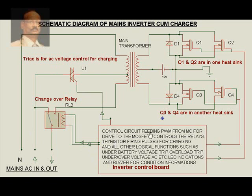The control circuit provides PWM pulses, either from a microcontroller or from a PWM IC like the SG3524, which is a very popular IC for driving the MOSFETs. It also controls the relay, provides triac firing pulses based on battery voltage feedback for charging, and handles logical protection functions such as under-battery trip when battery voltage falls, overvoltage trip, overload trip if overload occurs during inverting operation, and under/over voltage AC sensing. LED indications, buzzer outputs, and other status information are also available from the inverter control card.